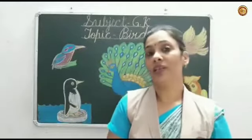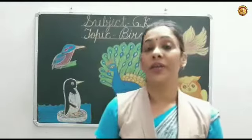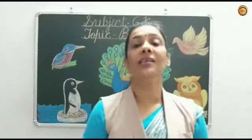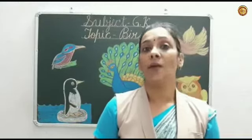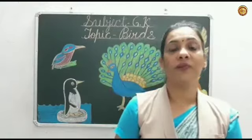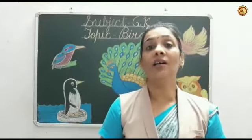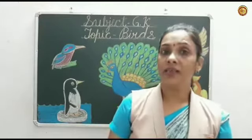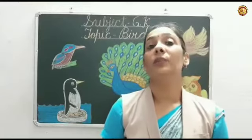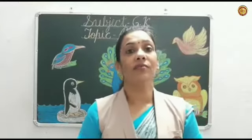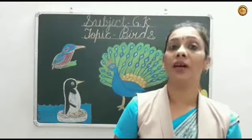You know children, which bird is our national bird? Peacock is our national bird. And hummingbird is the smallest bird in the world. And ostrich is the biggest bird in the world. Birds are very useful to us, so we have to take care of them.